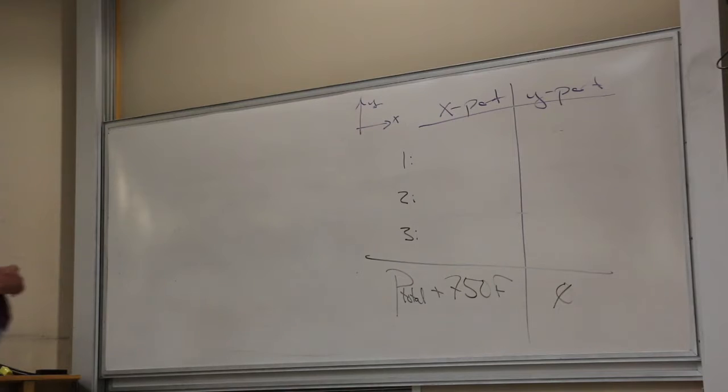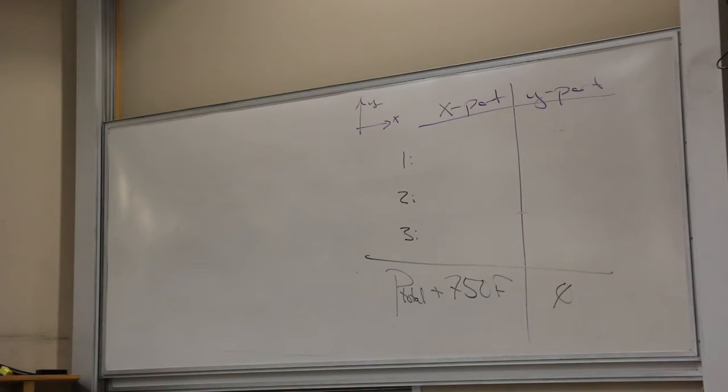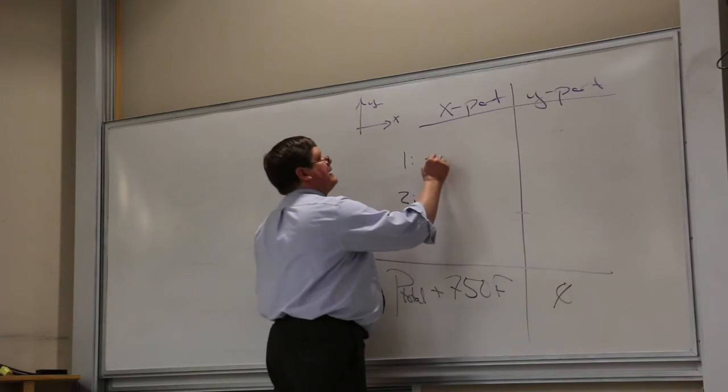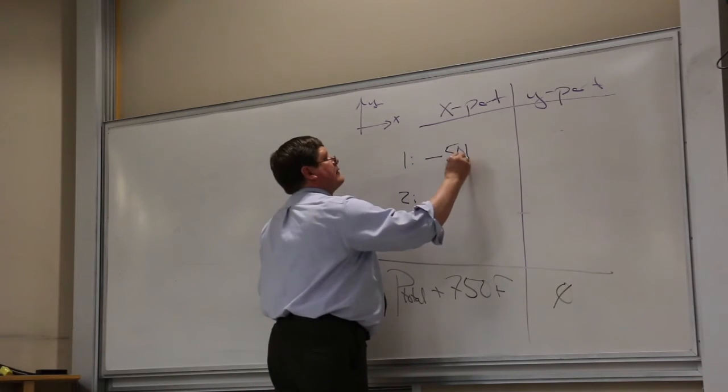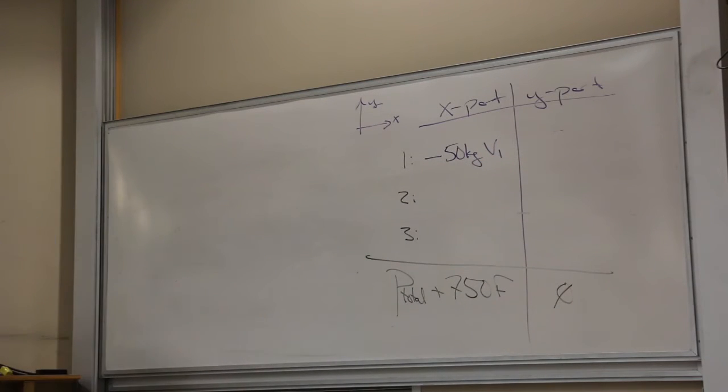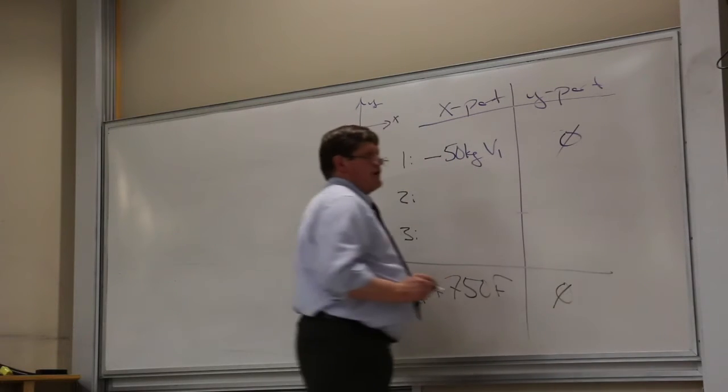If I look at fragment 1, it's going to the left, but I don't know how fast. So I would write that momentum as negative 50 kilograms V1. Is V1 going to be a positive or a negative number? Positive. It's a speed, a magnitude. I already said the direction was left by putting the minus sign there. And there's going to be none in the Y direction for 1.